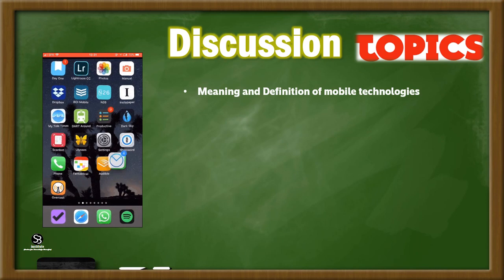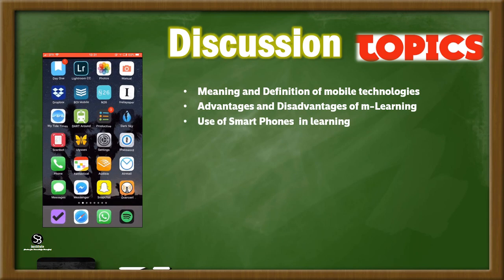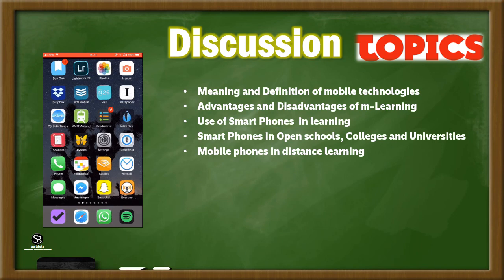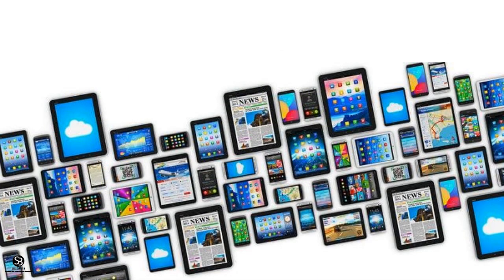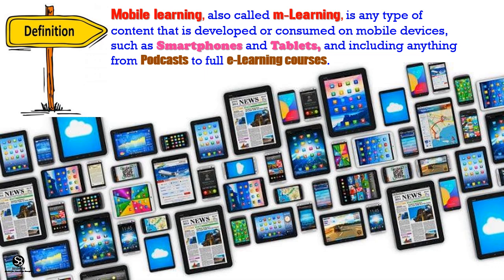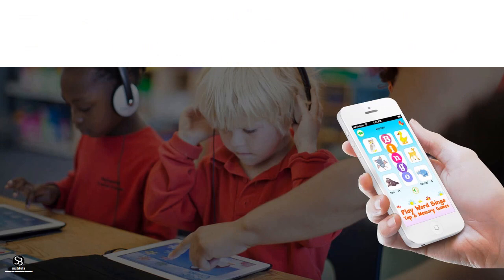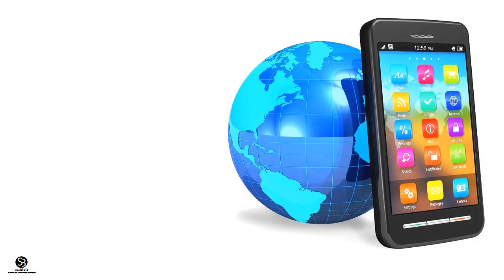We will discuss the following topics: meaning and definition of mobile technologies, advantages and disadvantages of m-learning, use of smartphones in learning, smartphones in open schools, colleges and universities, mobile phones used in distance learning, the properties of mobile devices, and popular m-learning apps. Let us begin with the definition of mobile learning. Mobile learning, also called m-learning, is any type of content that is developed or consumed on mobile devices such as smartphones and tablets.